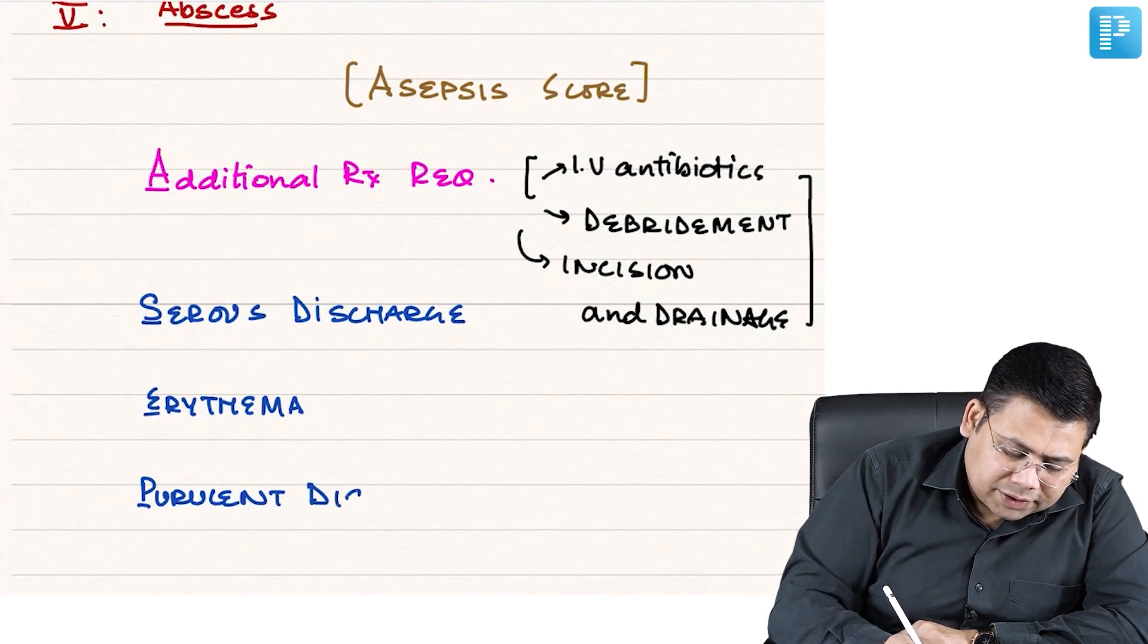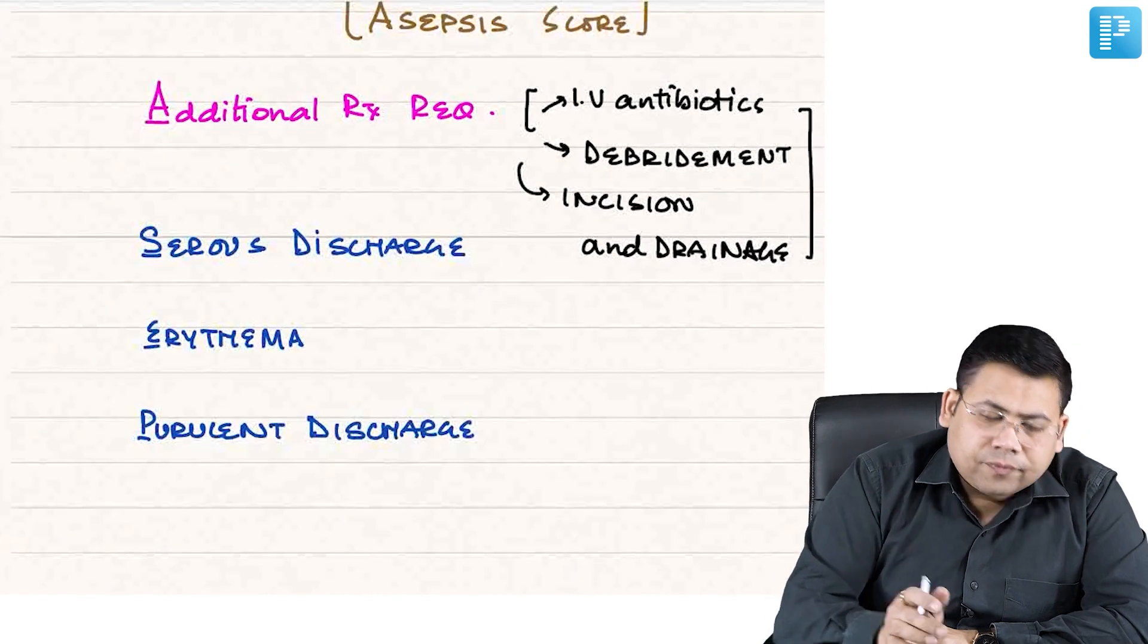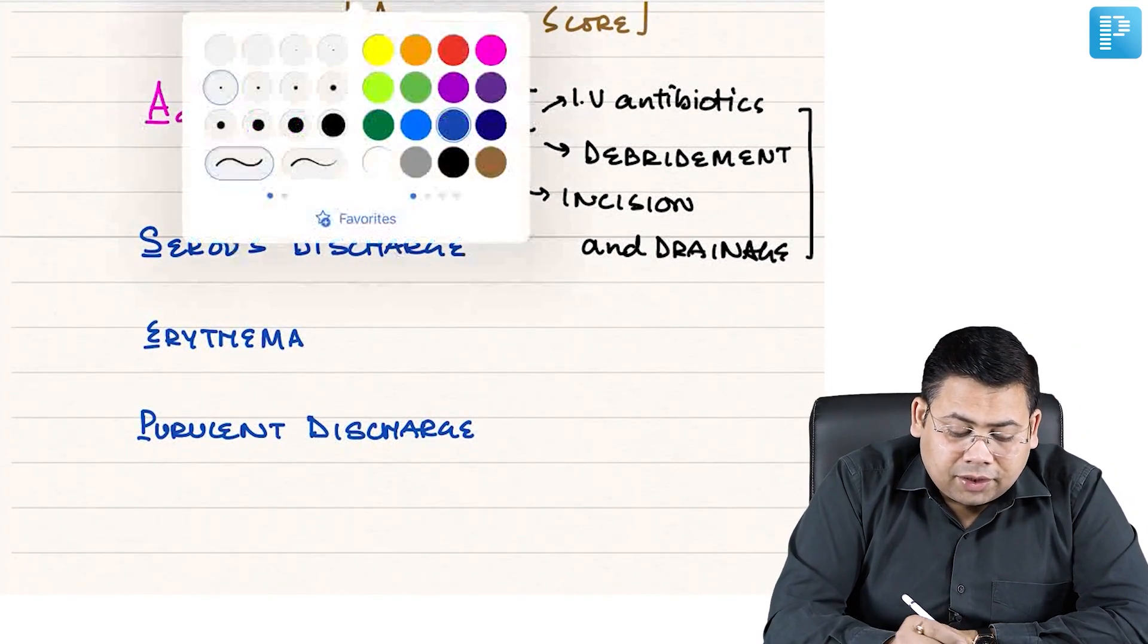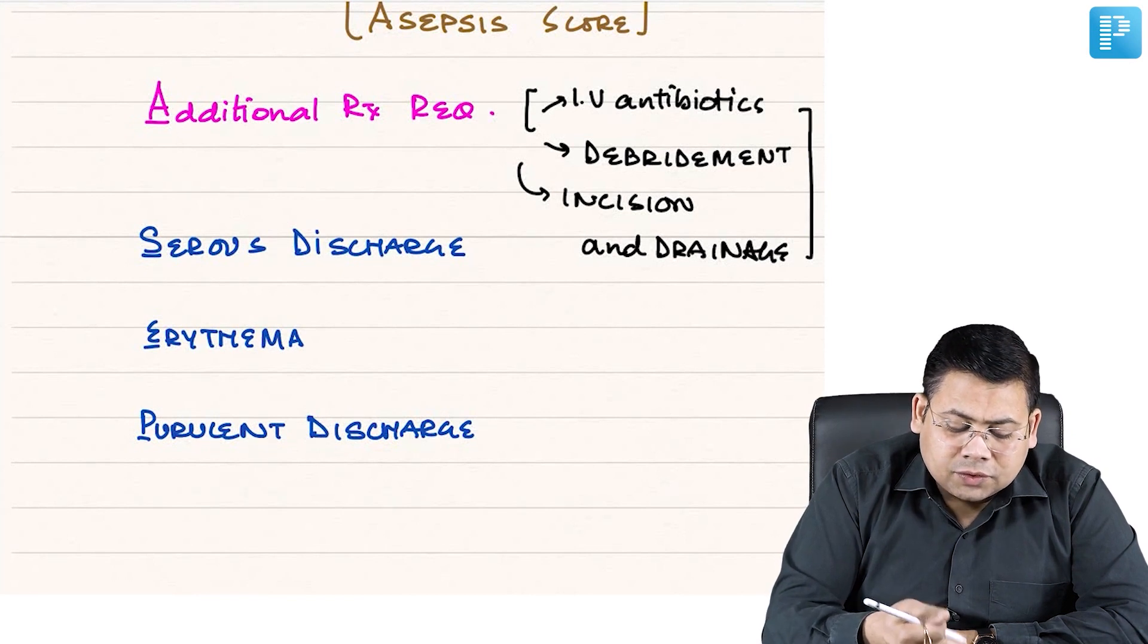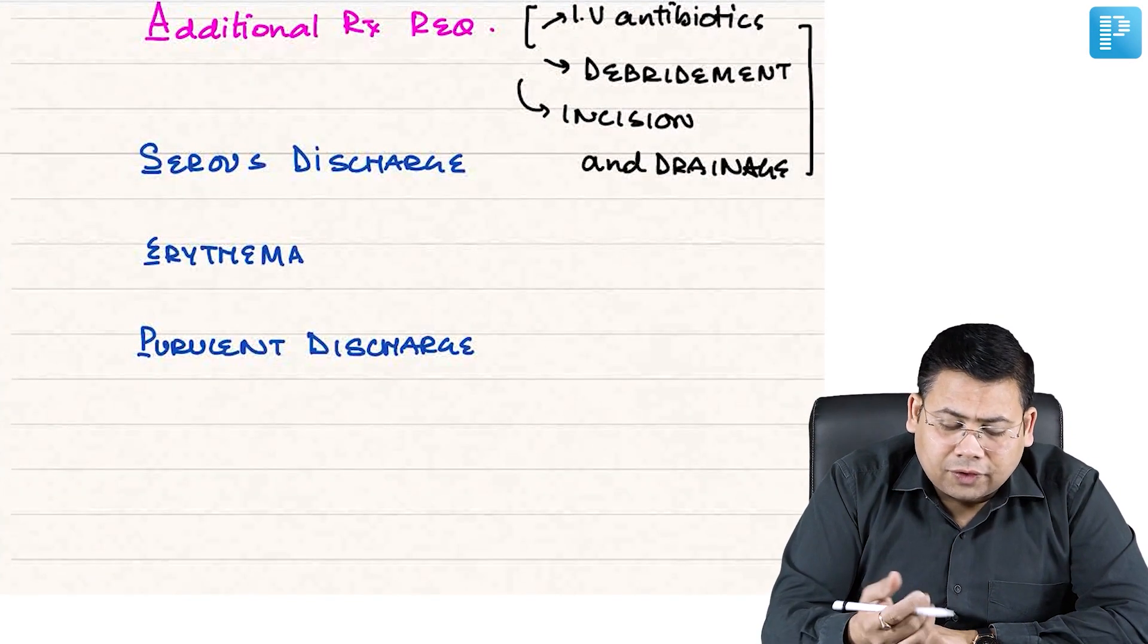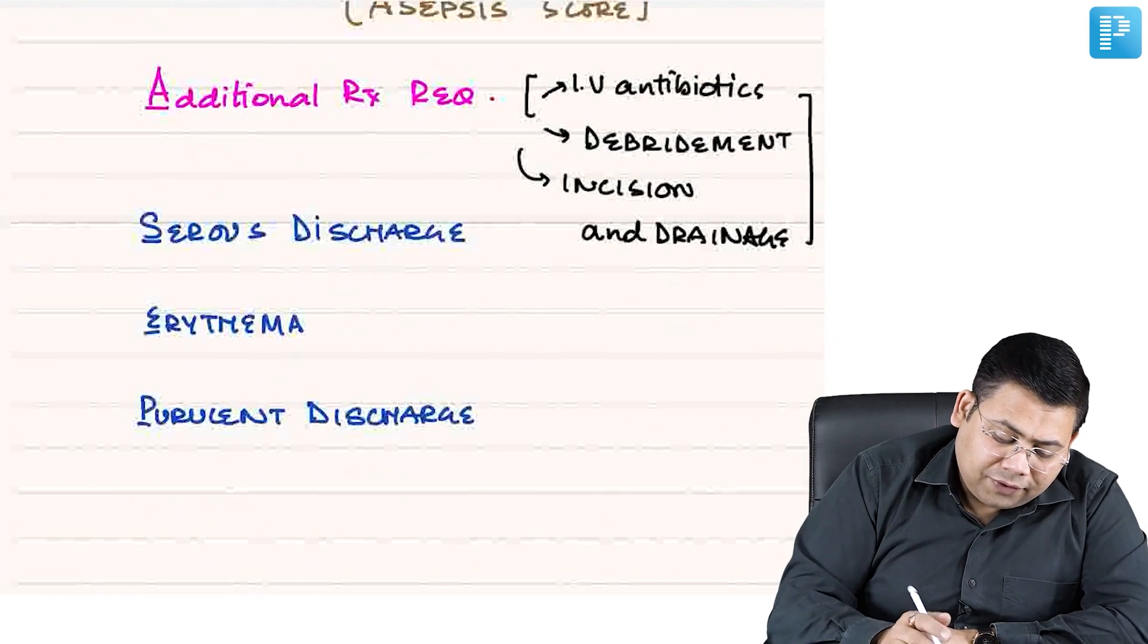So additional treatment required, you grade from 1 to 10. Remaining, you grade from 0 to 5 or 1 to 5. Then we have S.